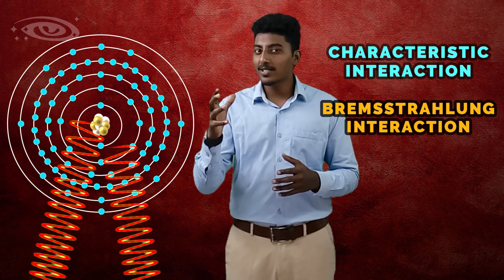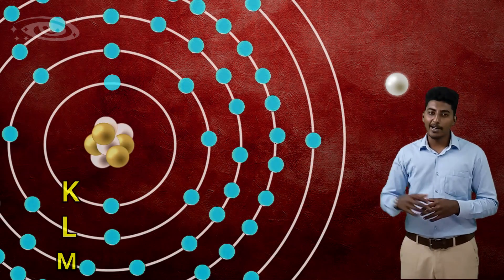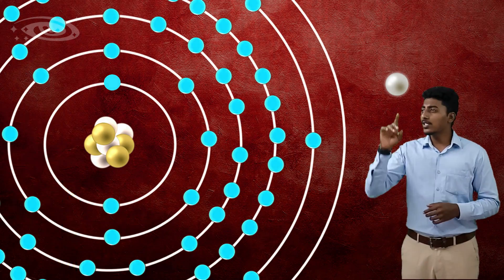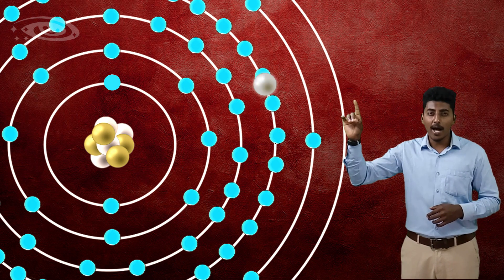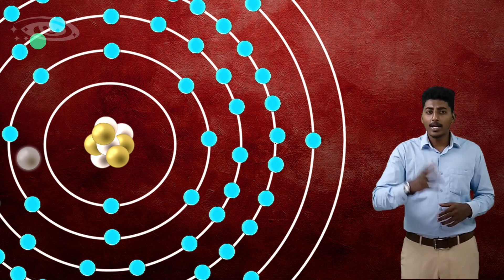Let me explain both interactions one by one. First, let me tell about characteristic interactions. For the sake of explanation, I just focus on a single high velocity electron and single atom of the target. Here, when this high velocity electron goes and ionizes the K-shell electron, a vacancy is created.